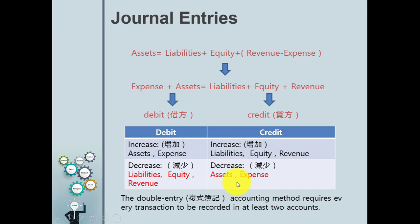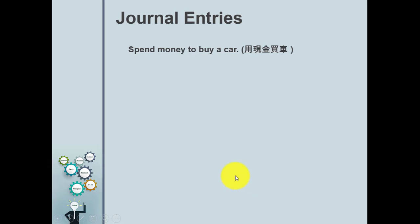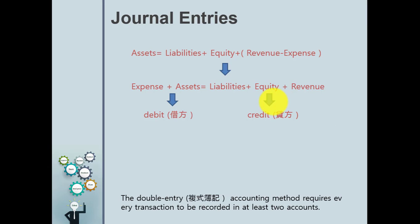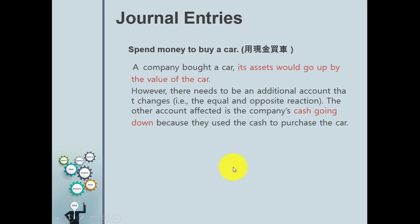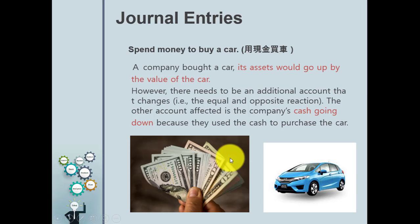We will look at an example in the next slide. When a company spends money to buy a car, first you need to recognize the correct account. In this case, car and cash are both assets. When we acquire the car, we increase assets, so we debit it. When we pay cash, we decrease assets, so we credit it. We put debit and credit parts at the same time when we write the journal entry.